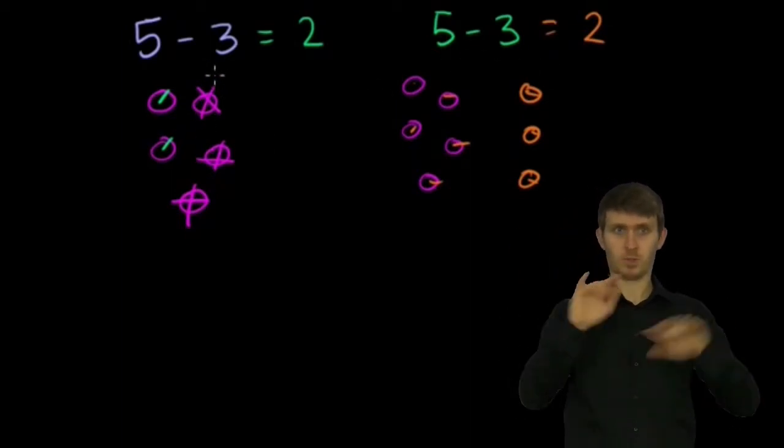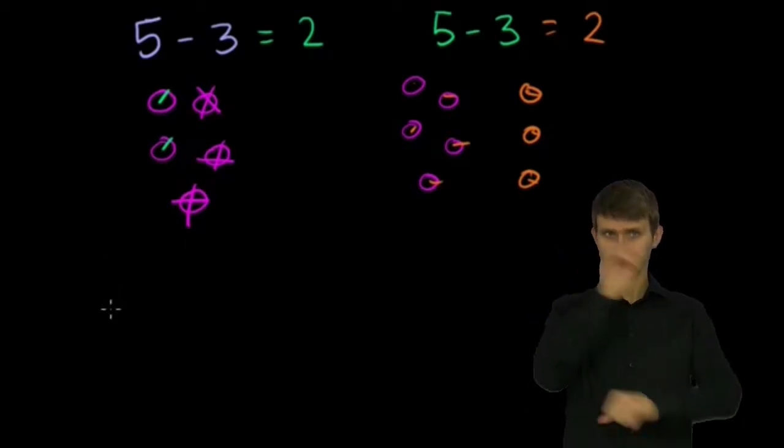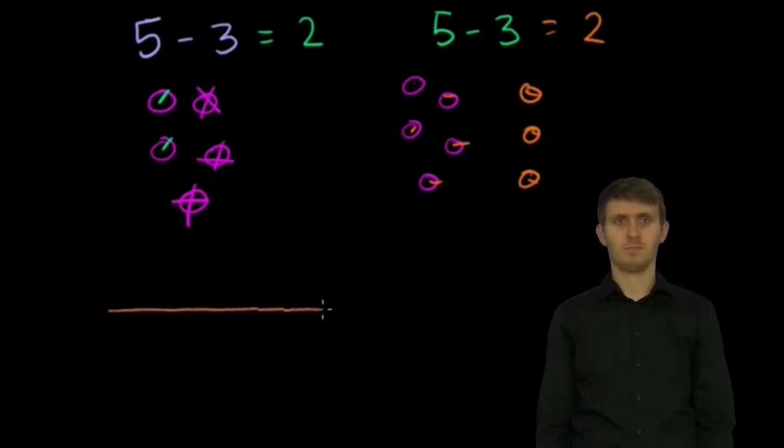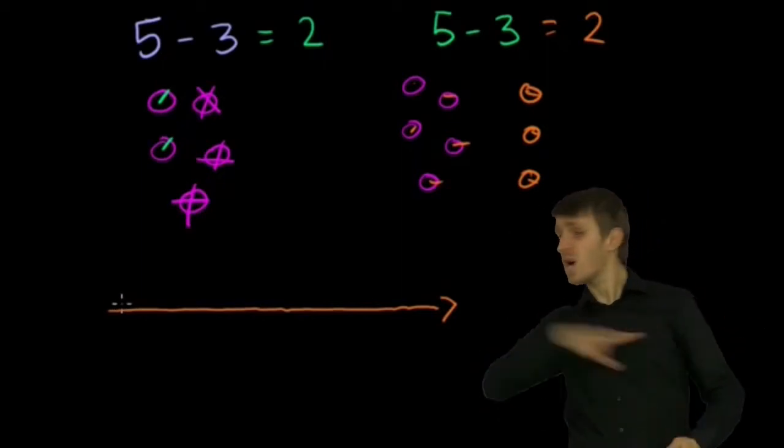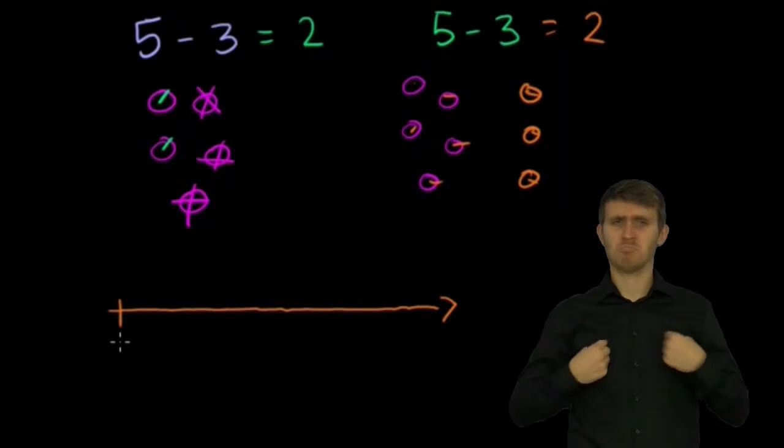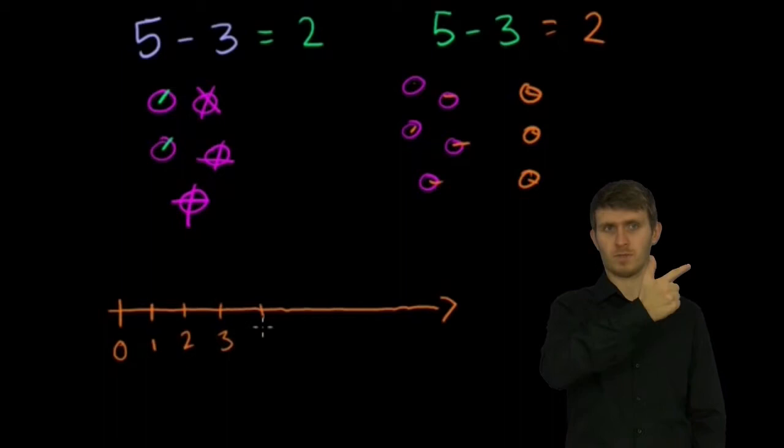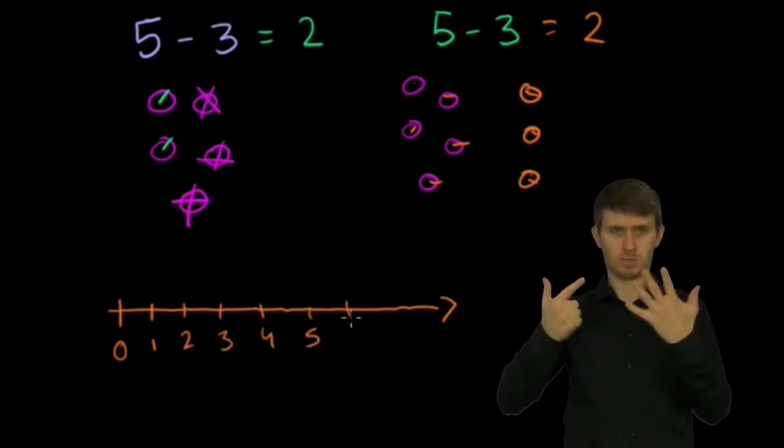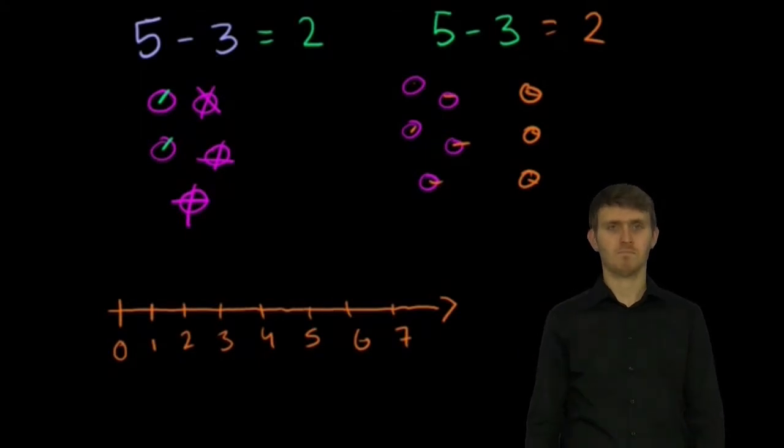Now we can also think of this from the number line point of view. So let me draw a number line, just like that. It's my number line. We've learned on the addition videos we can keep going off forever. And actually, we could even go to the left of 0 and go into negative numbers, which we'll see in future videos. But I'll start at 0: 0, 1, 2, 3, 4, 5. I'll just go up to 7.